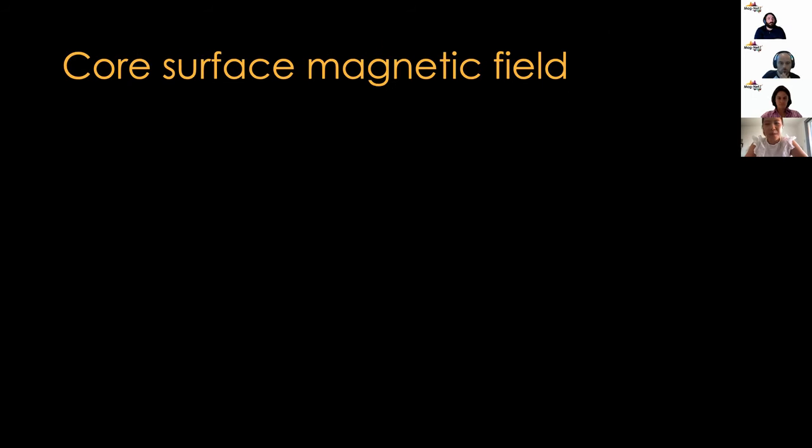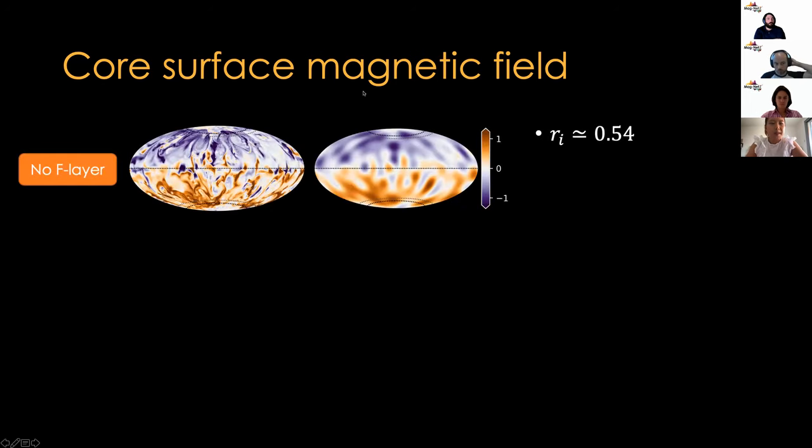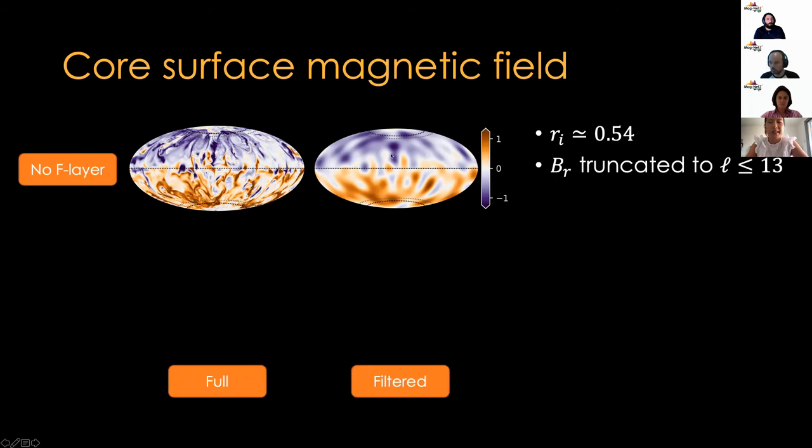And then looking at more of an observational perspective rather than a fluid dynamical one, it'd be interesting to see how the magnetic field morphology at the core surface can be compared to the observations that we might see from satellite data. So, in our simulations, here for our reference case, we have a regular sized inner core with no F-layer. And on the left-hand side, we have the full resolution. And on the right-hand side, we've truncated the radial magnetic field here that we're seeing at the core surface to degree 13, which is consistent with what we might see from the observations.